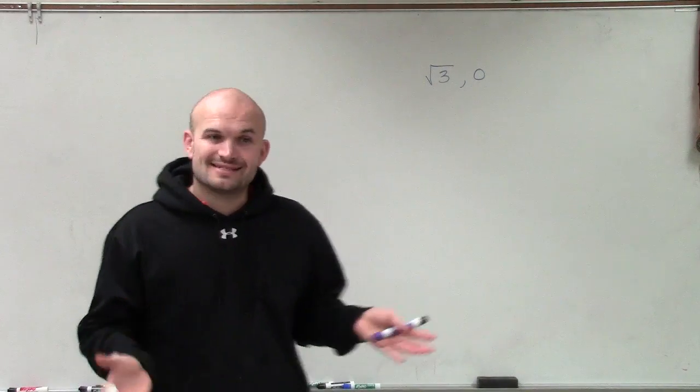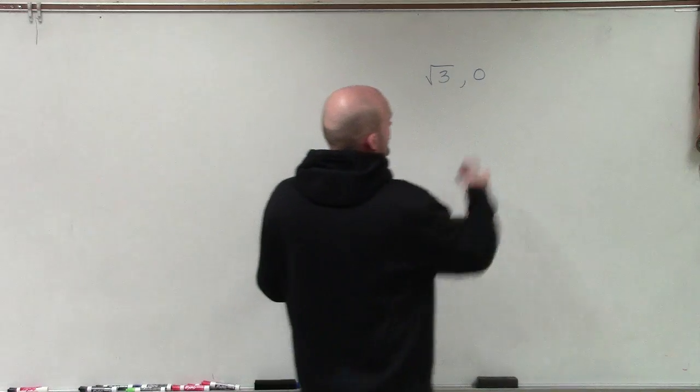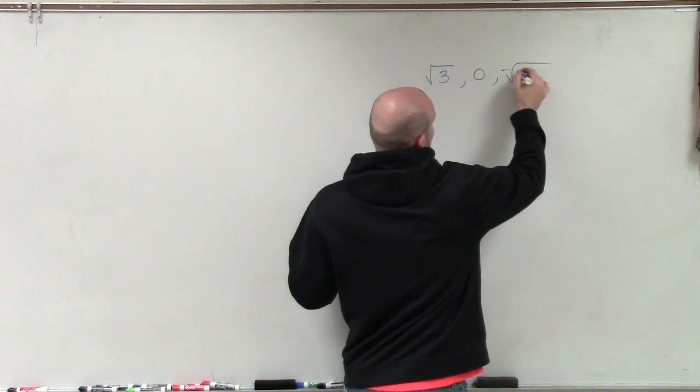Now, remember, whenever we have the square root as a zero, we need to make sure we include our complex conjugate, which would be negative square root of 3.